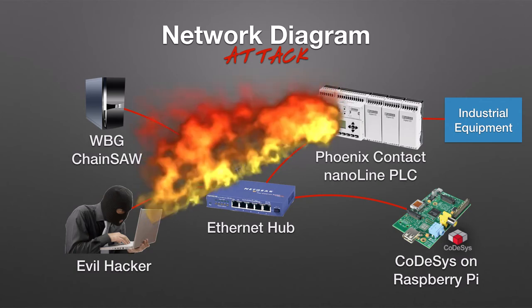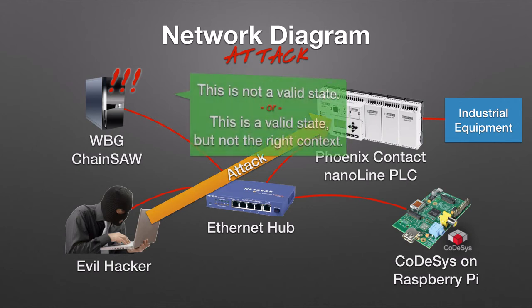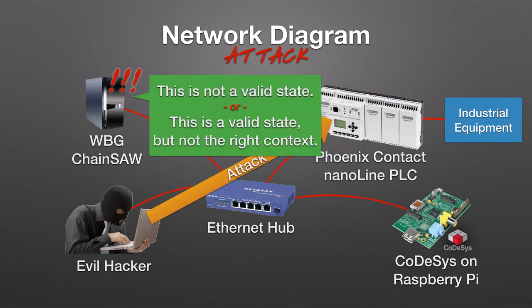To do that, he starts sending commands directly to the PLC, causing the pump to continuously run, the inlet valve to remain open, and the outlet valve to stay closed. As soon as the attack has any effect on the PLC's state, an alarm is raised, and one of two errors is reported: either the state caused is completely invalid, or a valid state is occurring in the wrong context.